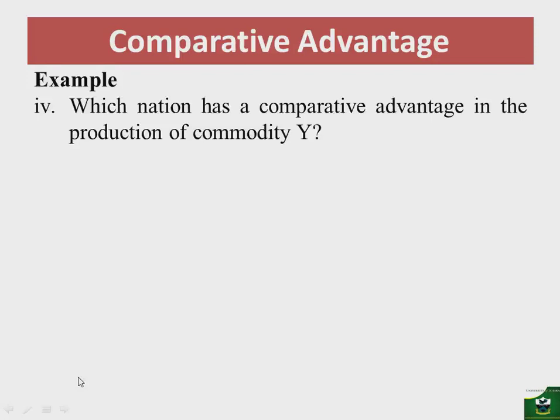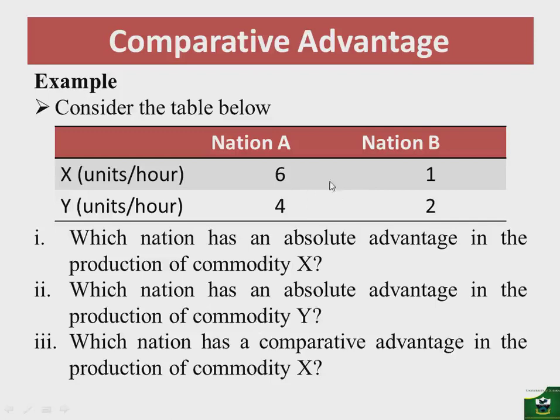Nation A's efficiency levels are more concentrated in producing X than in producing Y. Therefore, nation A has a comparative disadvantage in producing commodity Y because it has a lower relative efficiency in Y. The absolute disadvantage for nation B is smaller in producing Y, which means nation B has a comparative advantage in the production of commodity Y.